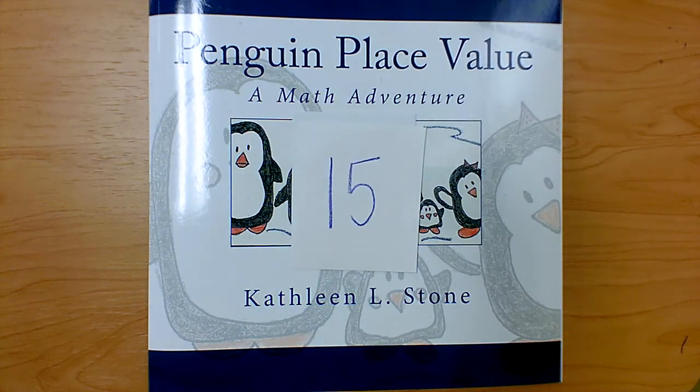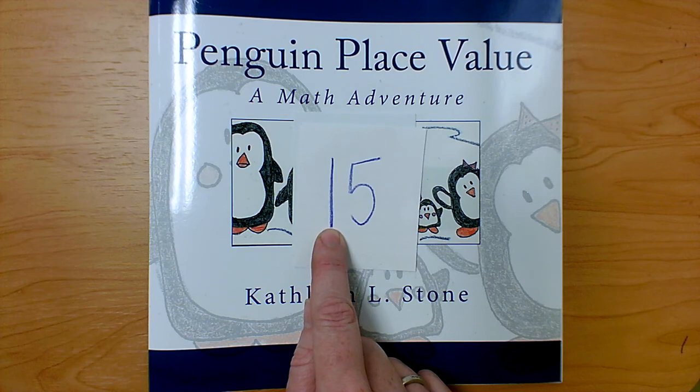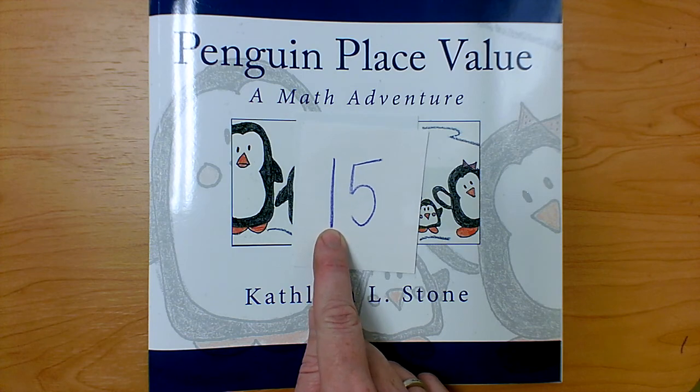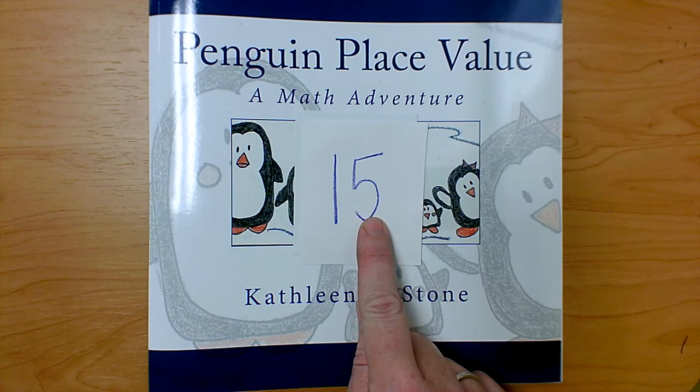So when we count by tens, we're talking about this digit. 10, 20, 30, 40, 50, 60, 70, 80, or 90. When we talk about this one, we're talking about counting by ones.